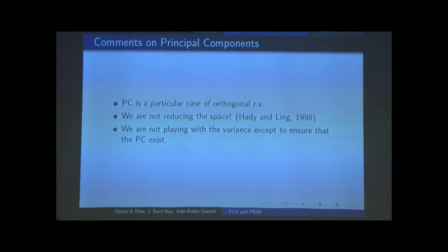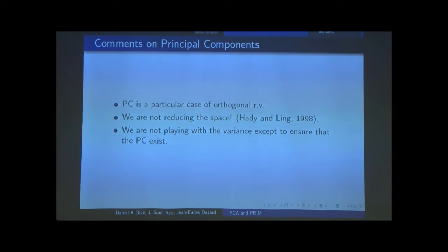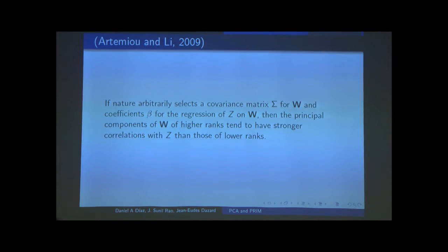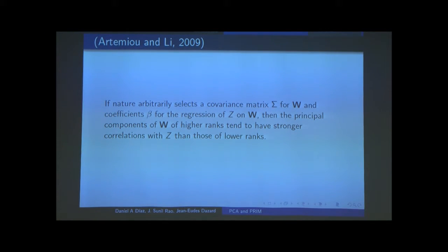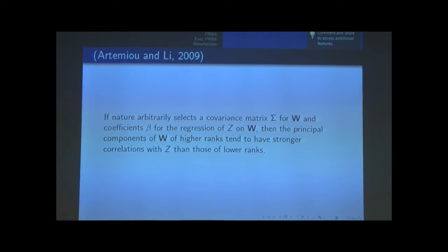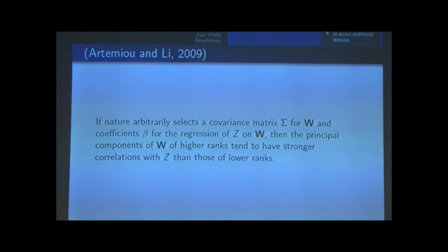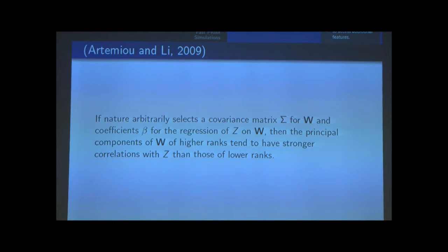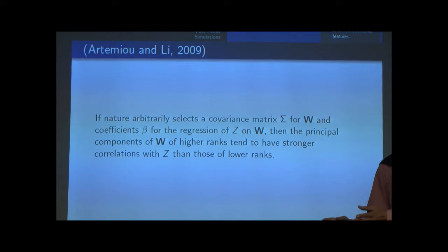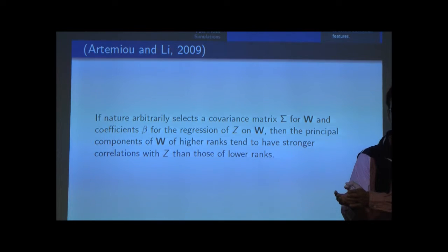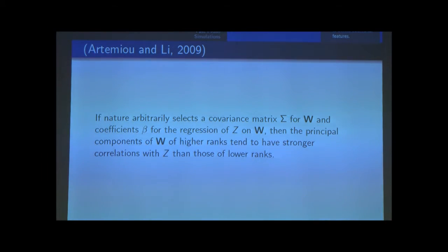We are not playing with the variance — we only use it to ensure principal components exist. Bing Li and R.T. Mu proved in Statistica Sinica (2009) that the main principal components explain the response better in probability than the last principal components — the first PC has higher probability of explaining the response better than the second, third, fourth, and so on — using the variance-covariance structure. We are not using that; we are only using the geometry and orthogonality.